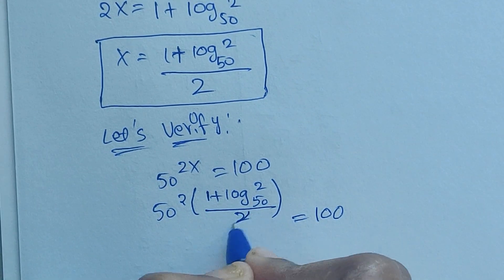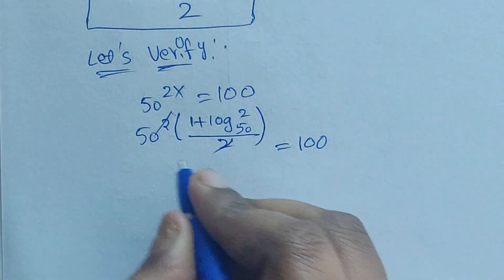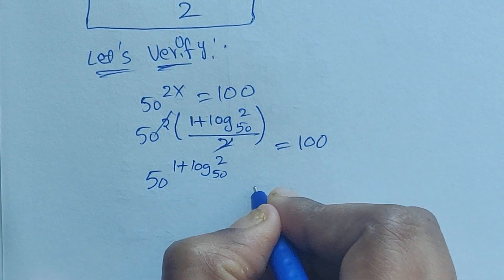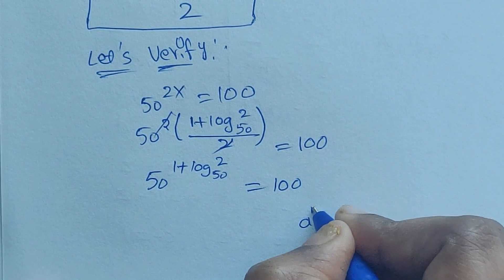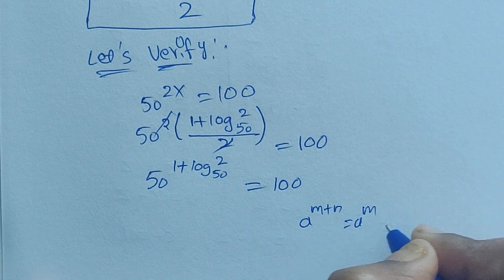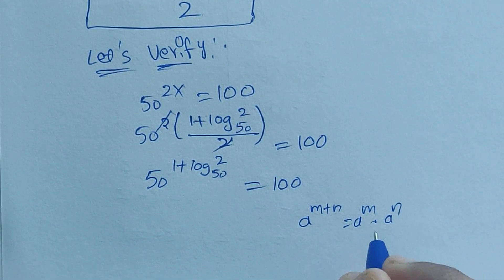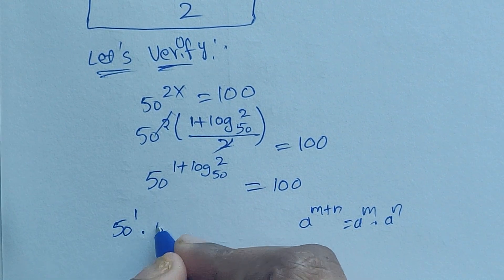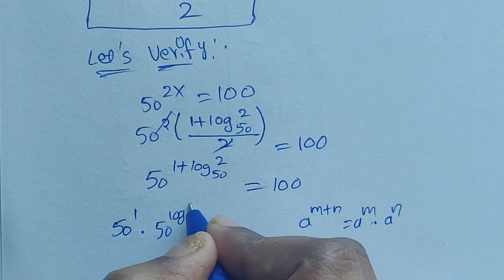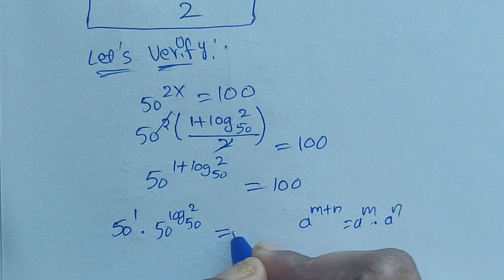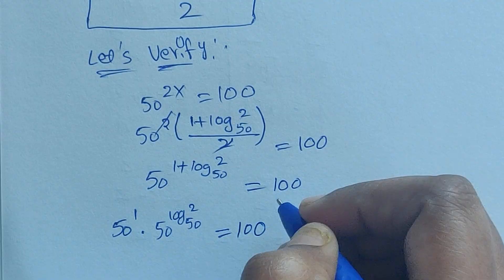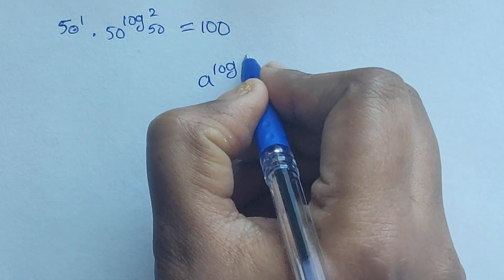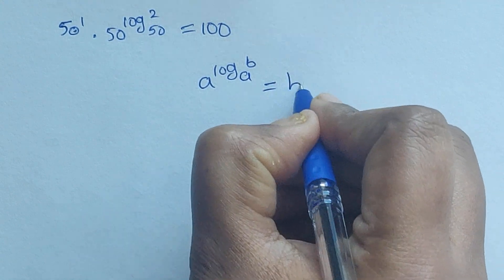Substituting: 50 to the power of 2 times (1 plus log of 2 base 50) divided by 2 equals 100. The 2s cancel, giving 50 to the power of (1 plus log of 2 base 50) equals 100. Using the exponent rule a to the power of (m plus n) equals a^m times a^n, we get 50 to the power of 1 times 50 to the power of log of 2 base 50 equals 100.